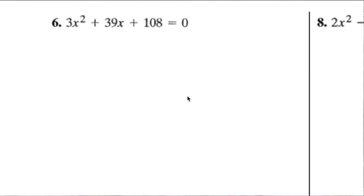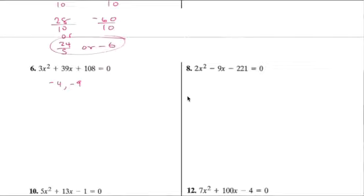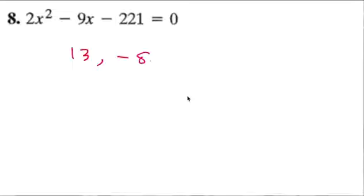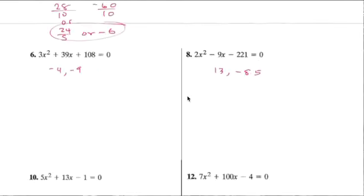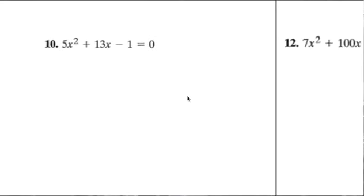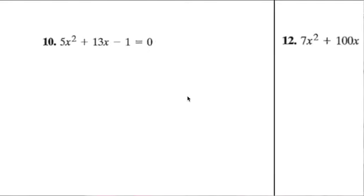Number 6: the answer is negative 4 and negative 9. It's 13 and negative 8.5. Number 10 — it's not a perfect square; you guys should know how to do this. I can't do every single one of them, so if you have any questions, ask me.